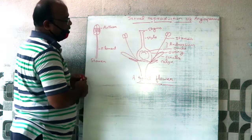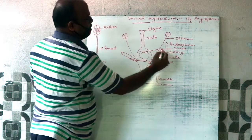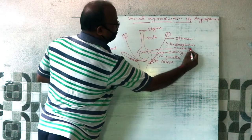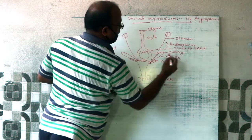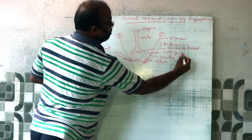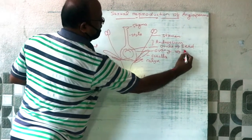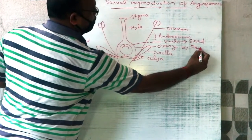After fertilization, the Ovule bears an embryo and such an Ovule is known as a Seed. The mature Ovary is known as a Fruit.